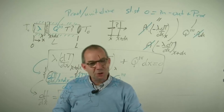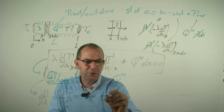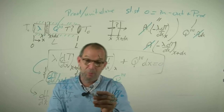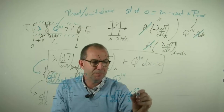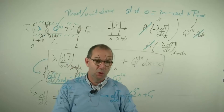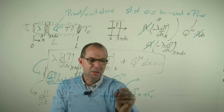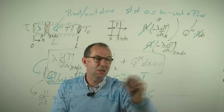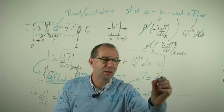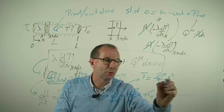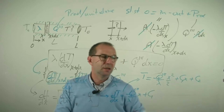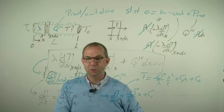This looks pretty nasty but it's not too bad. I can integrate once: dT/dx equals minus Q'''/λ times x plus an integration constant C1. I was looking for T, not dT/dx, so I integrate again. Integrating x gives half x squared, so: T equals minus Q'''/λ times x²/2, plus C1·x, plus another integration constant C2. This is the general solution of the equation, but it has two unknown constants.